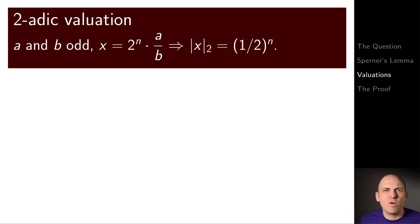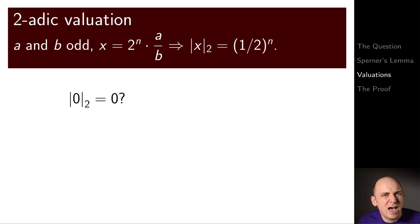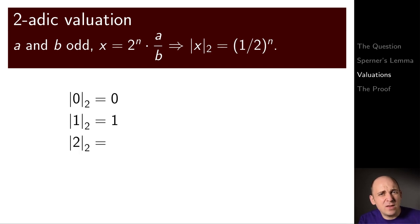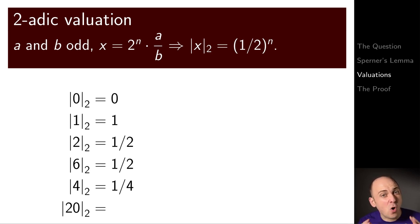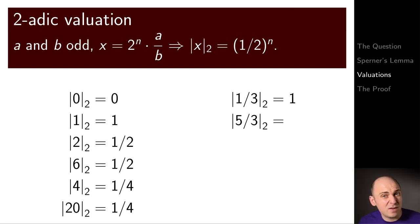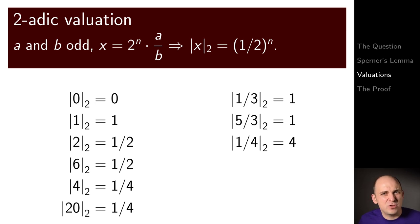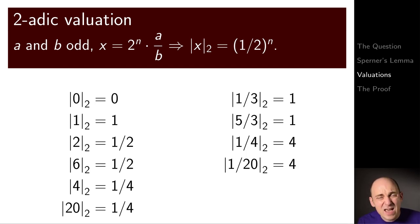Here are some examples to get a feeling for how this works. The 2-adic valuation of 0 is 0. The 2-adic valuation of 1 is 1. The 2-adic valuation of 2 is one-half. The 2-adic valuation of 6 is also one-half, since 6 and 2 both have one factor of 2. The 2-adic valuation of 4 is one-fourth, and similarly the 2-adic valuation of 20 — which is 4 times 5 — is also one-fourth. The 2-adic valuation of one-third is 1 (there are no twos in one-third), and similarly five-thirds is also 1. The 2-adic valuation of one-fourth is 4, keeping to the idea that the 2-adic valuation is large when there's a big power of 2 in the denominator. Likewise, one-twentieth and three-twentieths also get 4, and 13/16 gets 16.